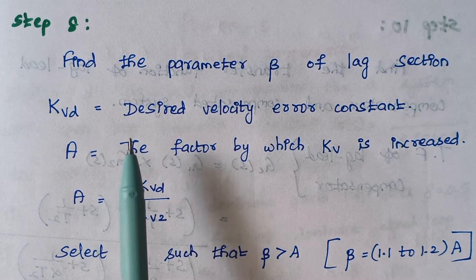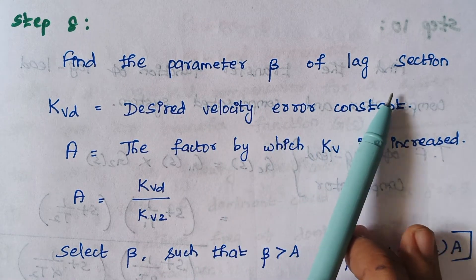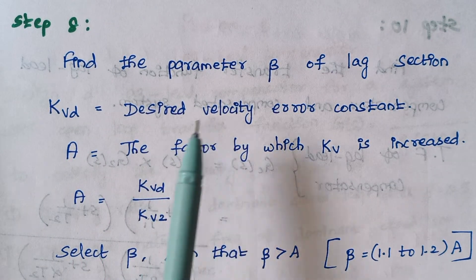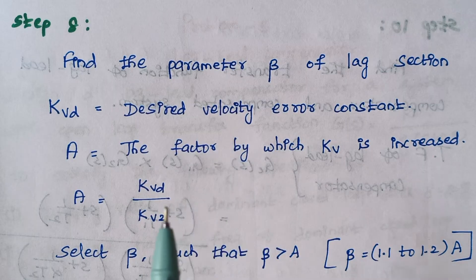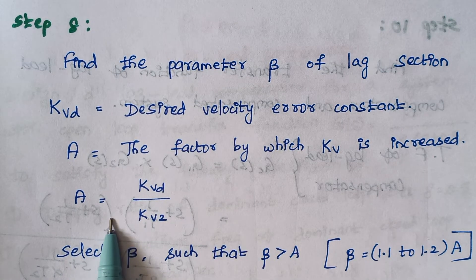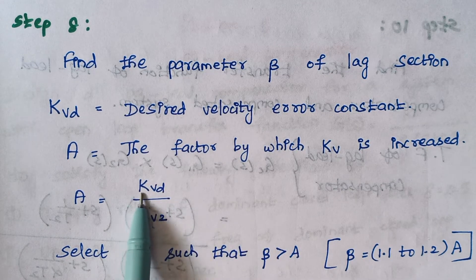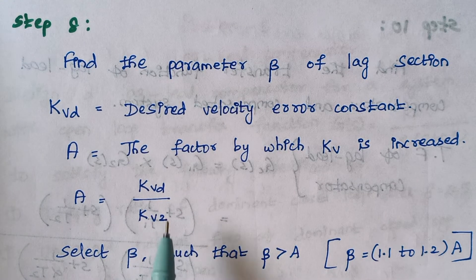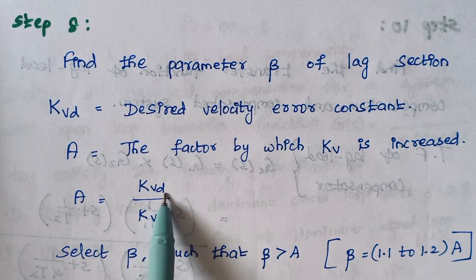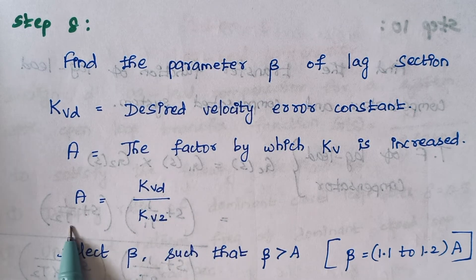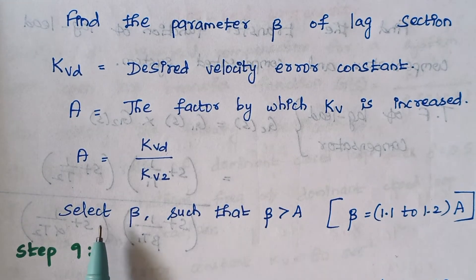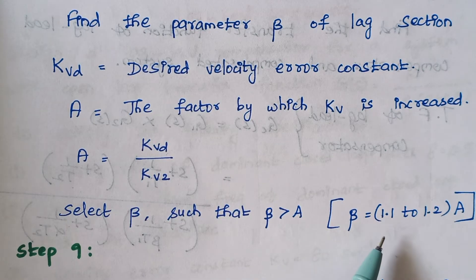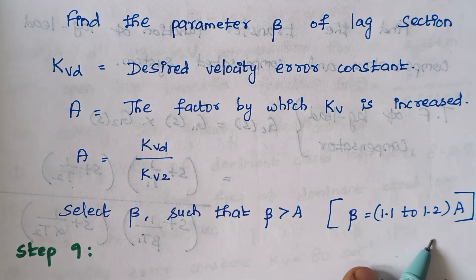Step 8: Find the parameter beta of the lag section. Here, Kvd is the desired value of the velocity error constant. Introduce a factor a, where a equals Kvd divided by Kv2. Select beta such that beta is always greater than a — typically beta equals 1.1 to 1.2 times a.